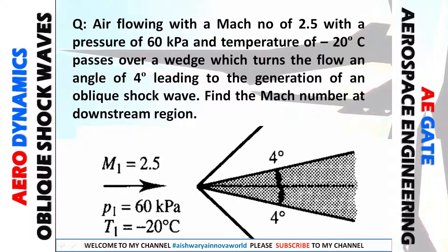Imagine a horizontal line — this is the flow direction. This is a wedge. If they ask the total angle of the wedge, that means it is 8 degrees, because the wedge covers both sides. From this horizontal line, from here to here it is 4 degrees, and from here to here it is 4 degrees — total 8 degrees. But from the direction of flow, which is horizontal, this wedge is deviated 4 degrees. So don't get confused: the wedge is deviated 4 degrees upward from the flow direction.